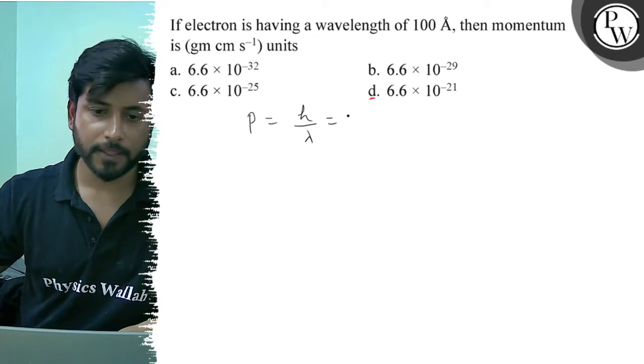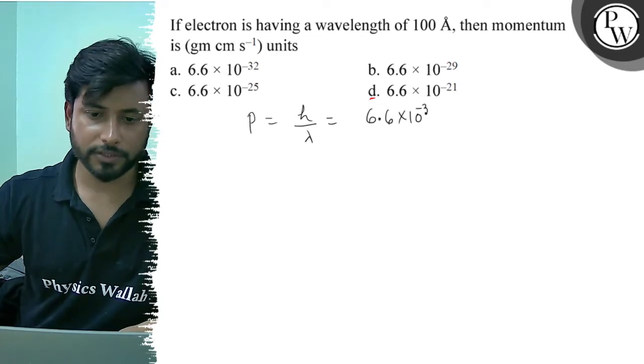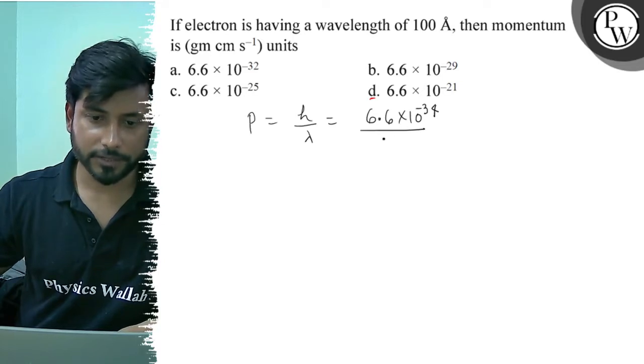h value is 6.6 × 10^-34, lambda value is 100 angstrom, so this is 10^-10 meters.